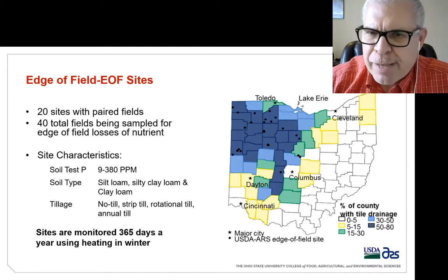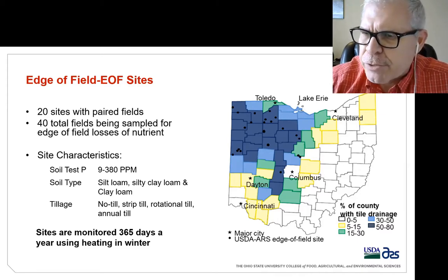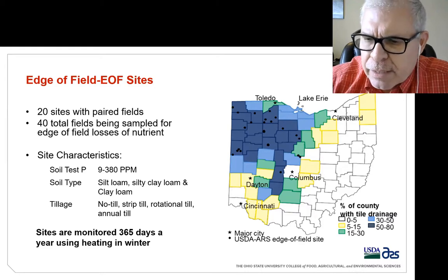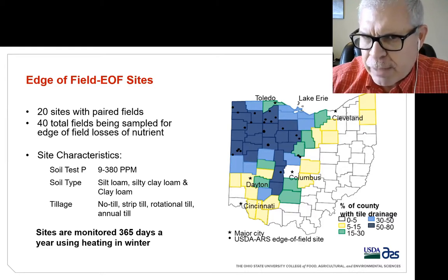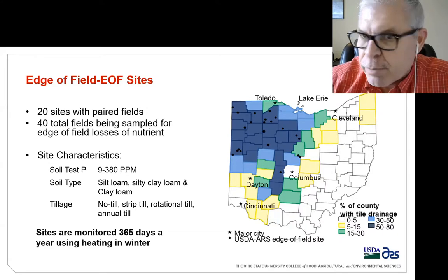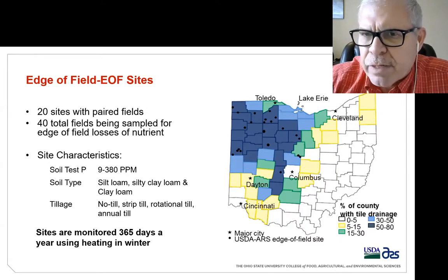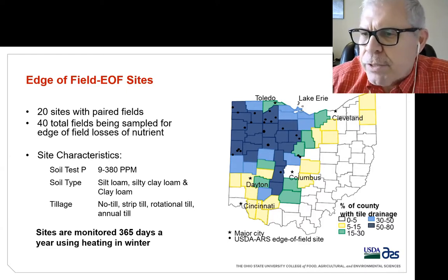Tillage varies — as you can imagine working with farmers, each farm has their own system of tillage and management, but we can categorize it in rough categories. The monitoring equipment is in a protected, heated structure, so we are doing 365-day-per-year sampling and capturing all flows that come off of an individual site.